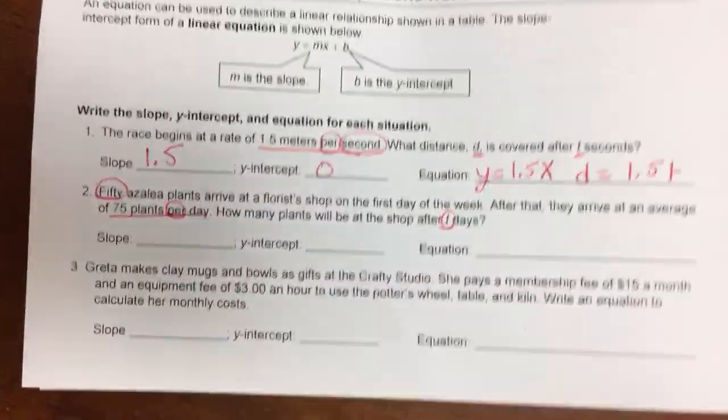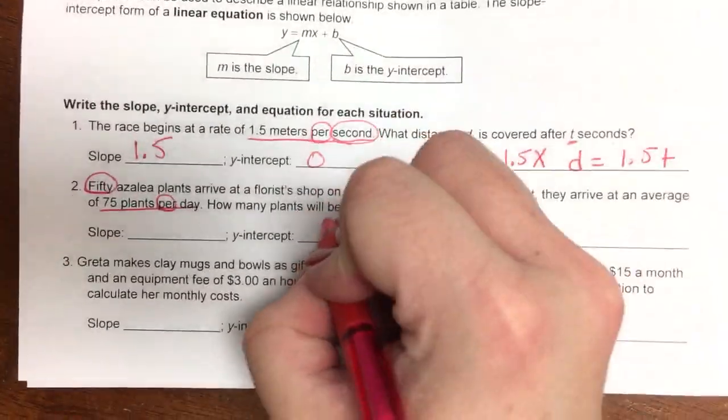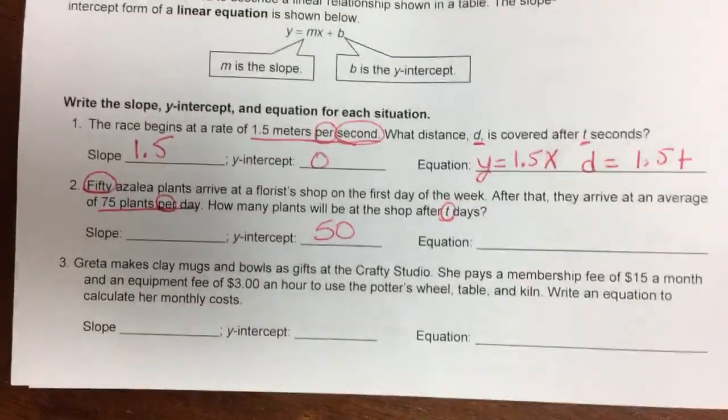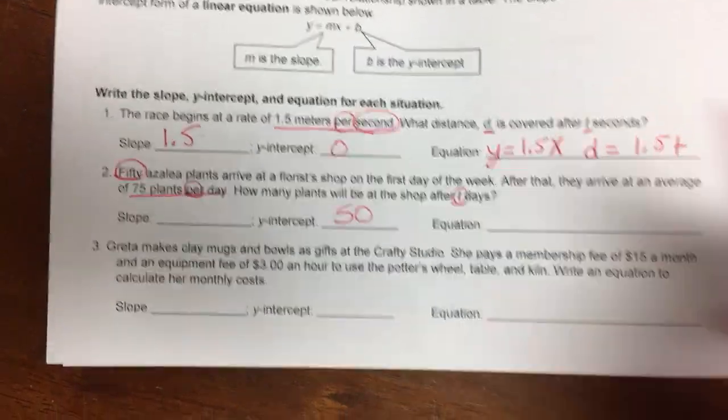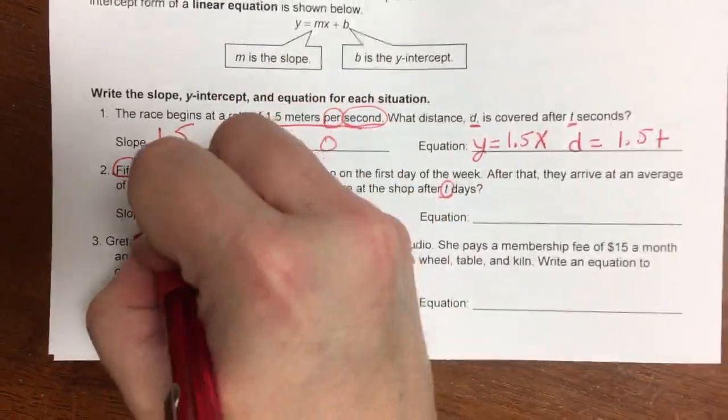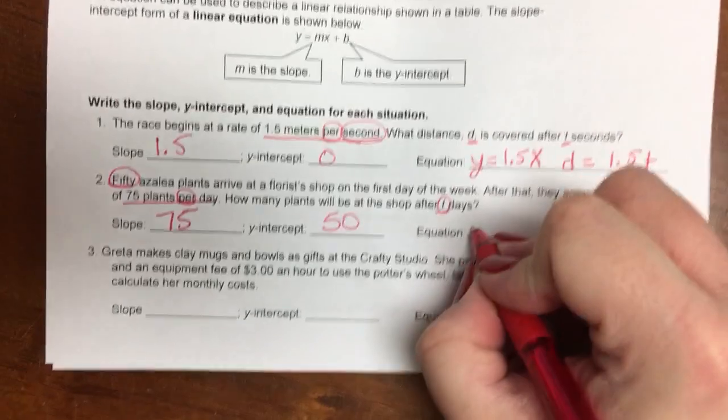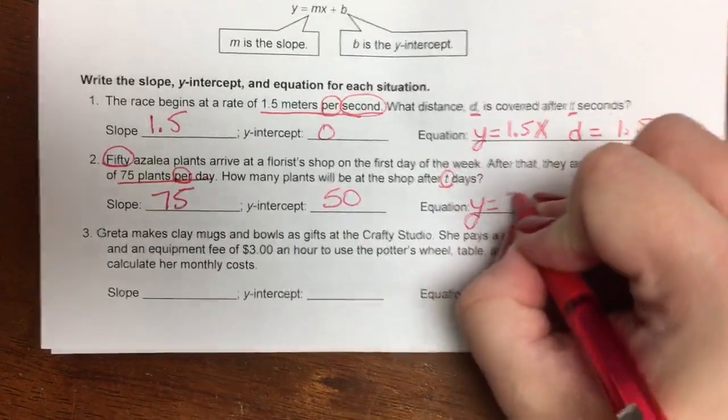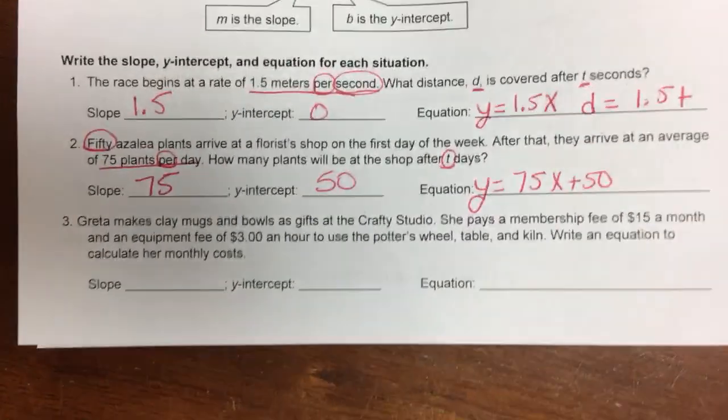So we start with 50. 50 arrive first. So 50 is our y-intercept. That's where we start, where we begin. And 75 plants per day is my slope. So my y is going to equal to 75x plus 50.